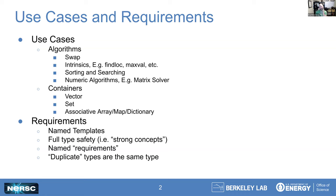Some of the standard data structure kinds of things — colloquially termed containers like vector and set — or an associative array, map, or dictionary (different languages use different terms), where I've got some sort of a key and that refers to some particular value.